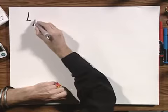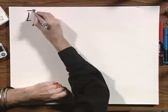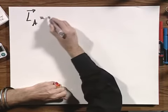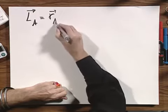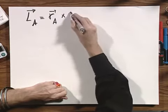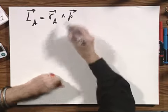Let me review briefly the meaning of angular momentum relative to a point A. It is the position vector relative to that point A cross P.